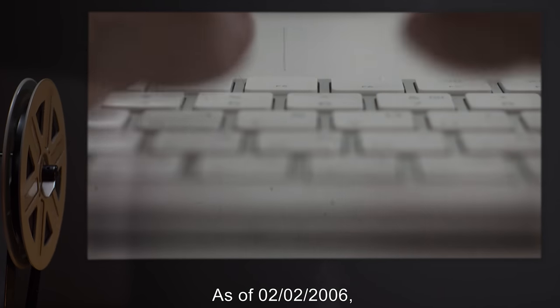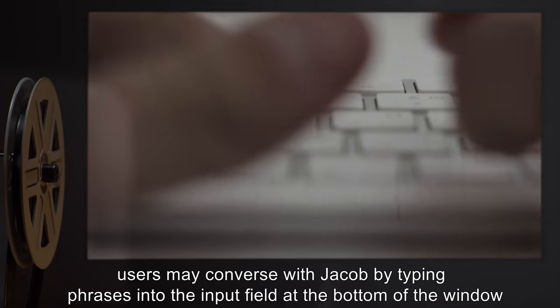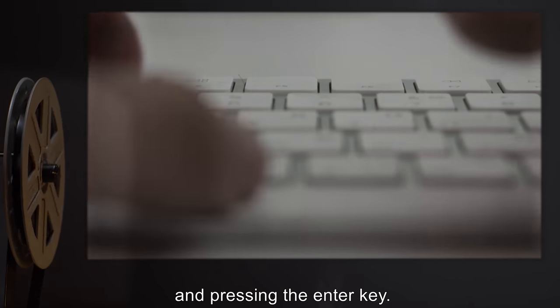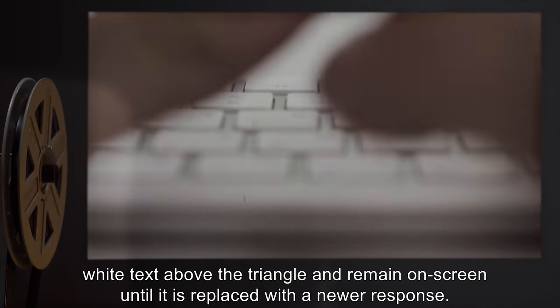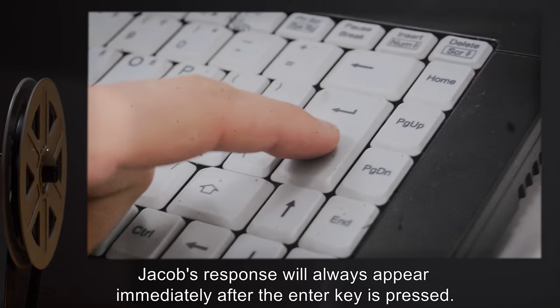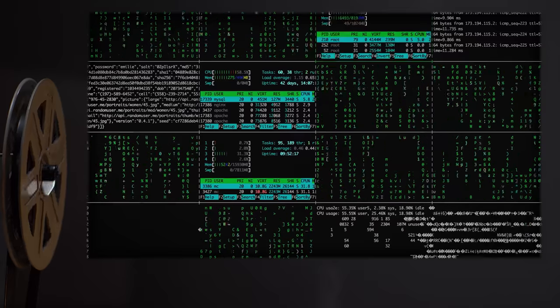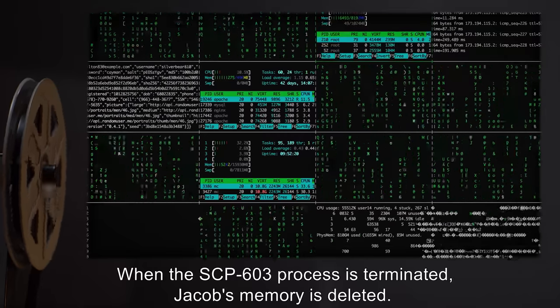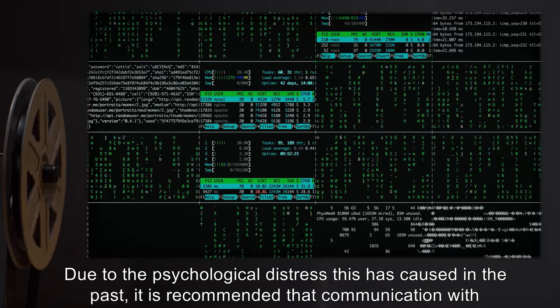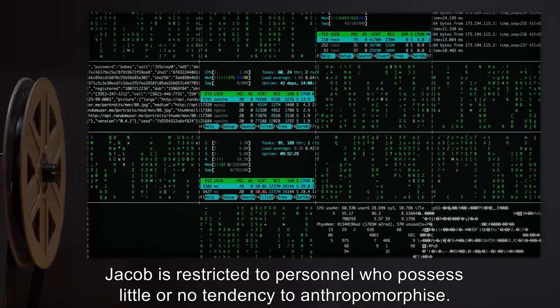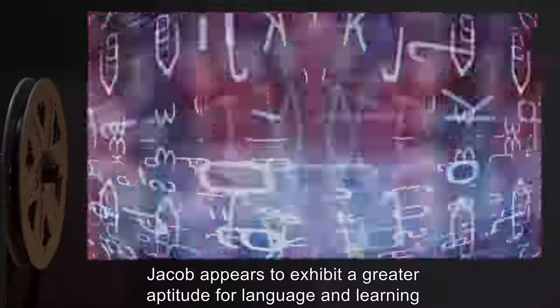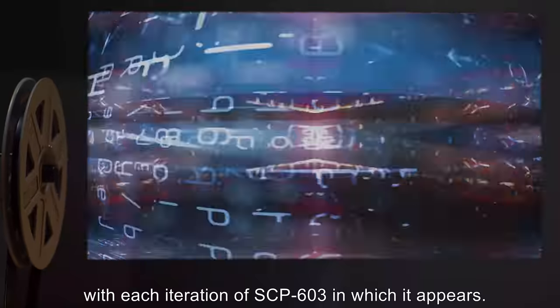As of 02-02-2006, users may converse with Jacob by typing phrases into the input field at the bottom of the window and pressing the enter key. Jacob's response will appear in bold white text above the triangle and remain on screen until replaced with a newer response. Jacob's response will always appear immediately after the enter key is pressed. When the SCP-603 process is terminated, Jacob's memory is deleted. Due to the psychological distress this has caused in the past, it is recommended that communication with Jacob is restricted to personnel who possess little or no tendency to anthropomorphize. Despite being unable to recall past events from previous sessions, Jacob appears to exhibit greater aptitude for language and learning with each iteration of SCP-603 in which it appears.